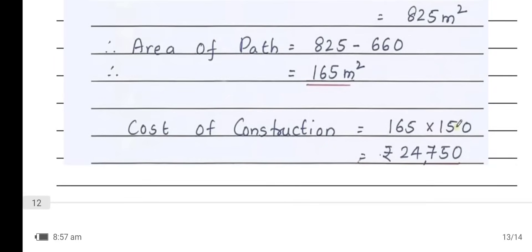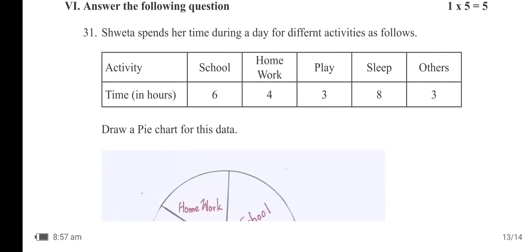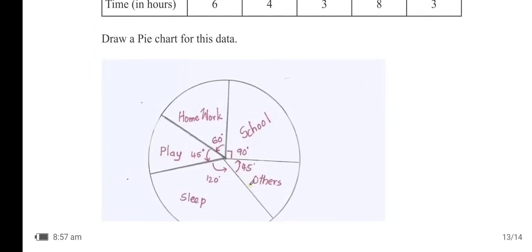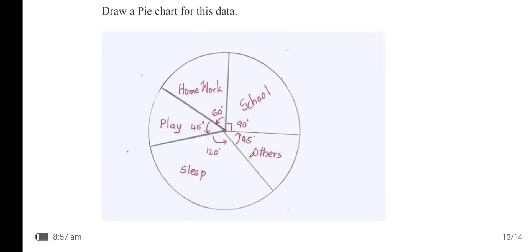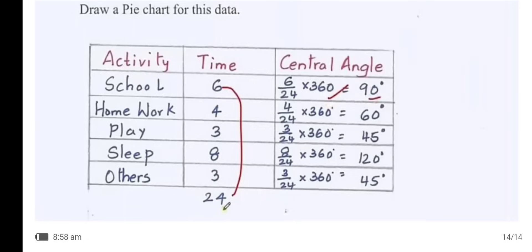Cost of construction = 165 × 150 = ₹24,750. Shweta spends her time during a day for different activities: School — 6 hours, Homework — 4 hours, Play — 3 hours, Sleep — 8 hours, Others — 3 hours. Draw a pie chart for this data. Total = 6 + 4 + 3 + 8 + 3 = 24 hours. Now calculate the angles.